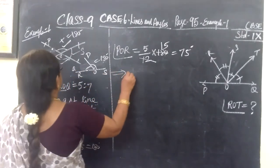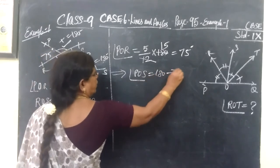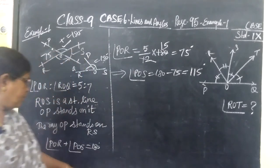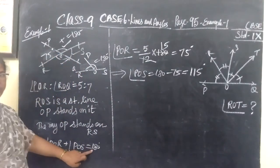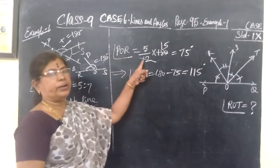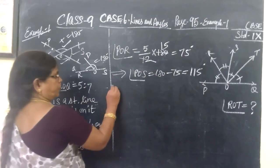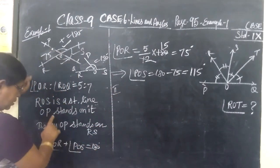So this implies angle POS equals 180 minus 75 equals 115 degrees. Because now we told POR plus POS equals 180 degrees, so one angle we know, so the other angle will be separated. So first part over. Now come to the second part.